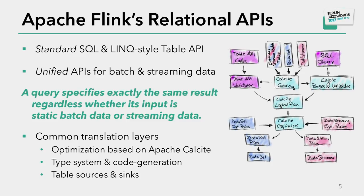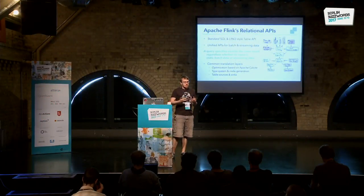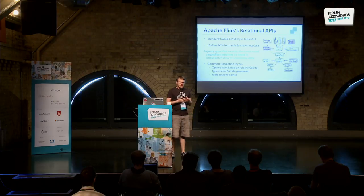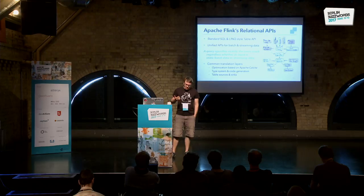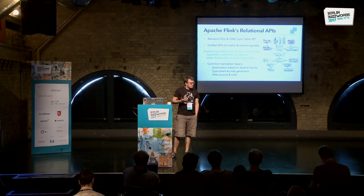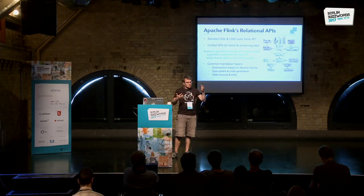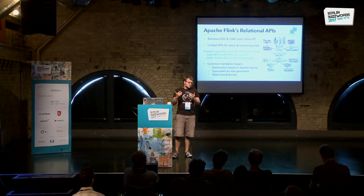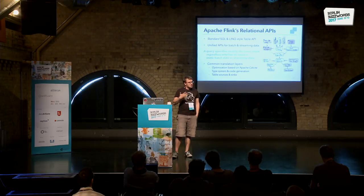The SQL and Table APIs have common translation layers and share a lot of internals — the runtime code is the same. All of this is based on Apache Calcite, which is a query optimizer and SQL parser. Apache Calcite is used to parse SQL and to translate Table API code into a common representation — a logical query plan. This logical plan is then optimized by Calcite's optimizer with custom rules depending on whether the input is streaming or batch, and then the physical plan is translated either into a Flink DataSet program for batch input or a DataStream program for streaming input.